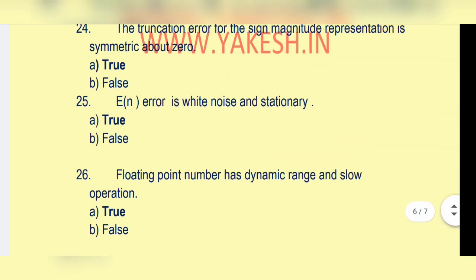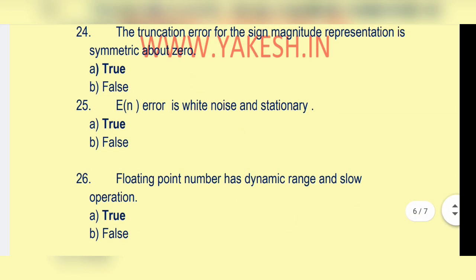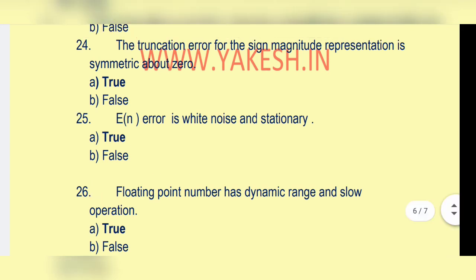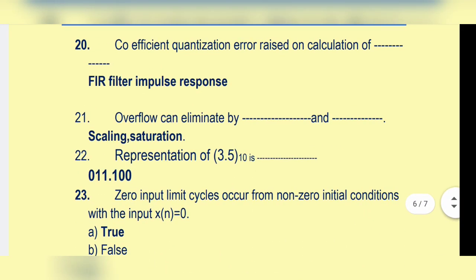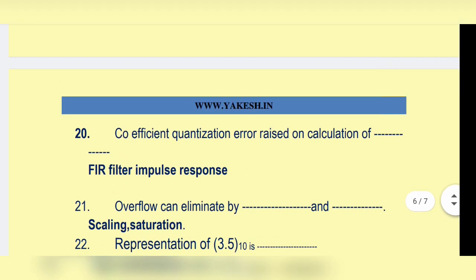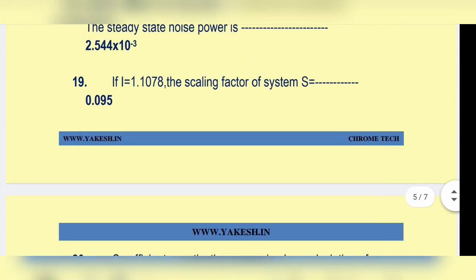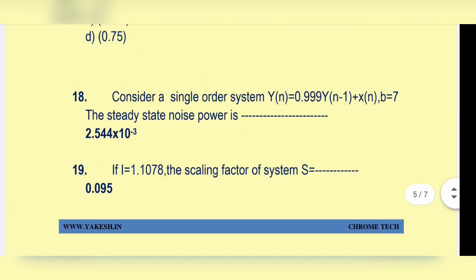Floating point numbers have a dynamic range and slow operation — option a: true. Let's go through all the questions again — all questions are very important.